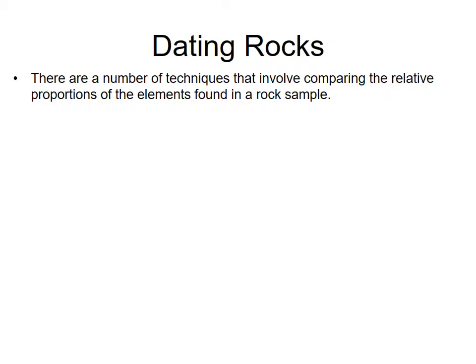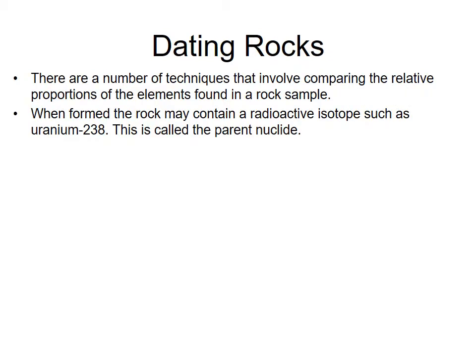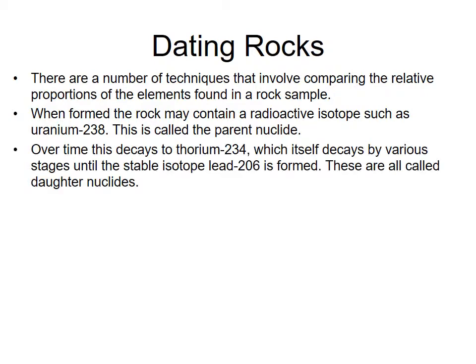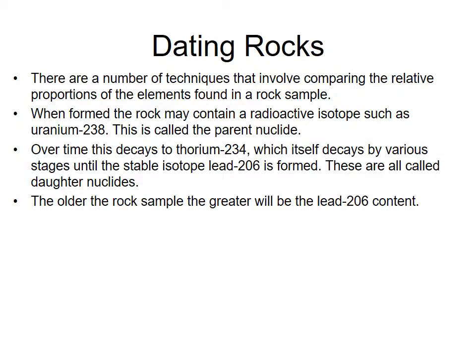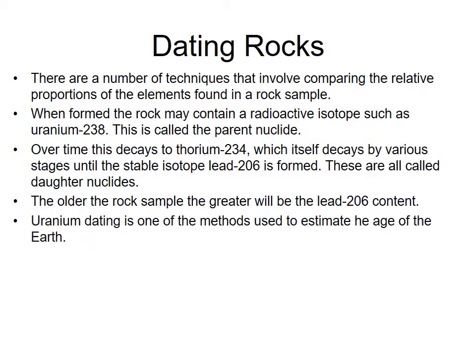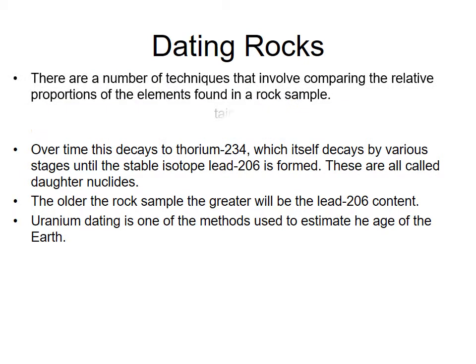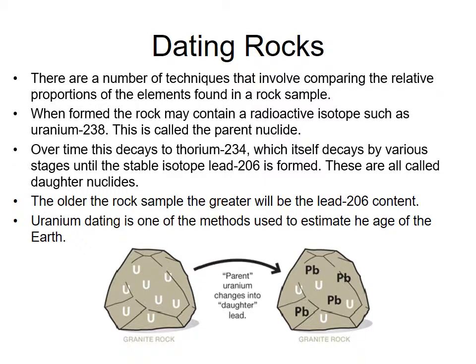For dating rocks, there are techniques involving comparing the relative proportions of elements found in a rock sample. When formed, the rock may contain a radioactive isotope like uranium-238 — called the parent nuclide — which over time decays via thorium-234 into the stable isotope lead-206, called the daughter. The older the rock sample, the greater the lead-206 content, because less uranium-238 remains, having been converted into lead-206. Uranium dating is one of the methods used to age the Earth — by working out the half-life of uranium-238 and seeing the ratio of lead to uranium to determine the relative age.